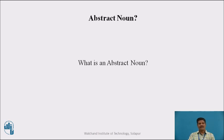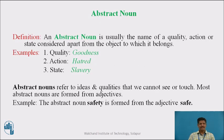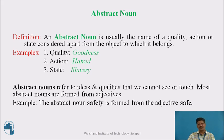Welcome back. Here is the answer: what is an Abstract Noun? An Abstract Noun is usually the name of a quality, action, or state considered apart from the object to which it belongs. For example, 'goodness' relates to quality, 'hatred' relates to action, and 'slavery' relates to state. Abstract Nouns refer to ideas and qualities that we cannot see or touch.